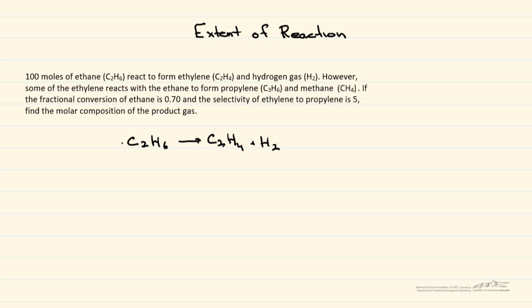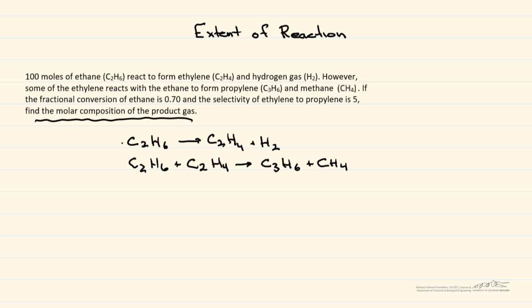However, some of the ethane (C₂H₆) reacts with the ethylene (C₂H₄), which forms propylene (C₃H₆) and methane. If the fractional conversion of ethane is 0.7 and the selectivity of ethylene to propylene is 5, we want to find the molar composition of the product gas.